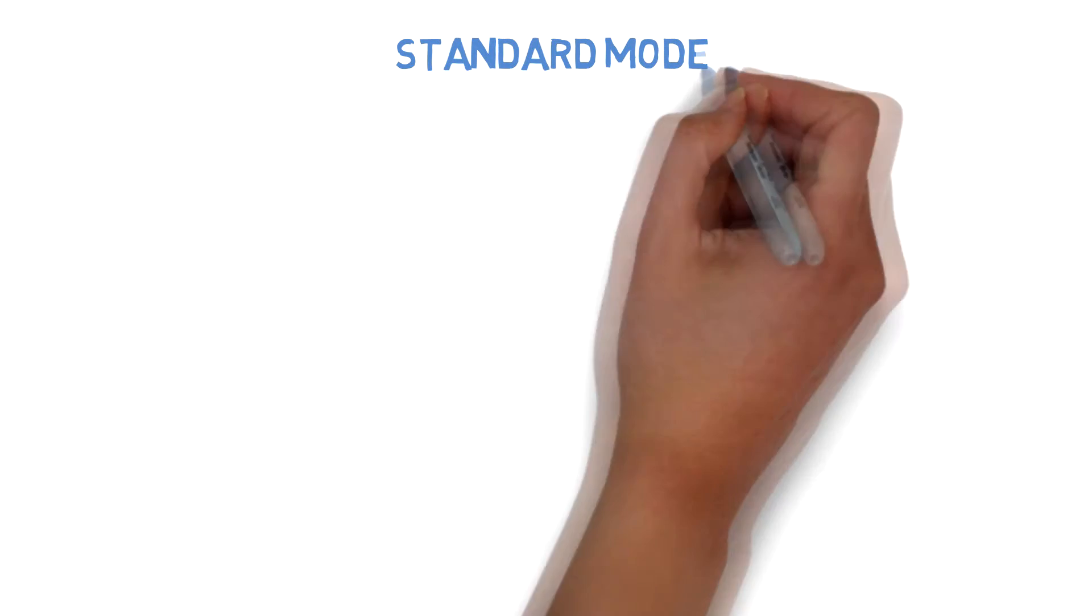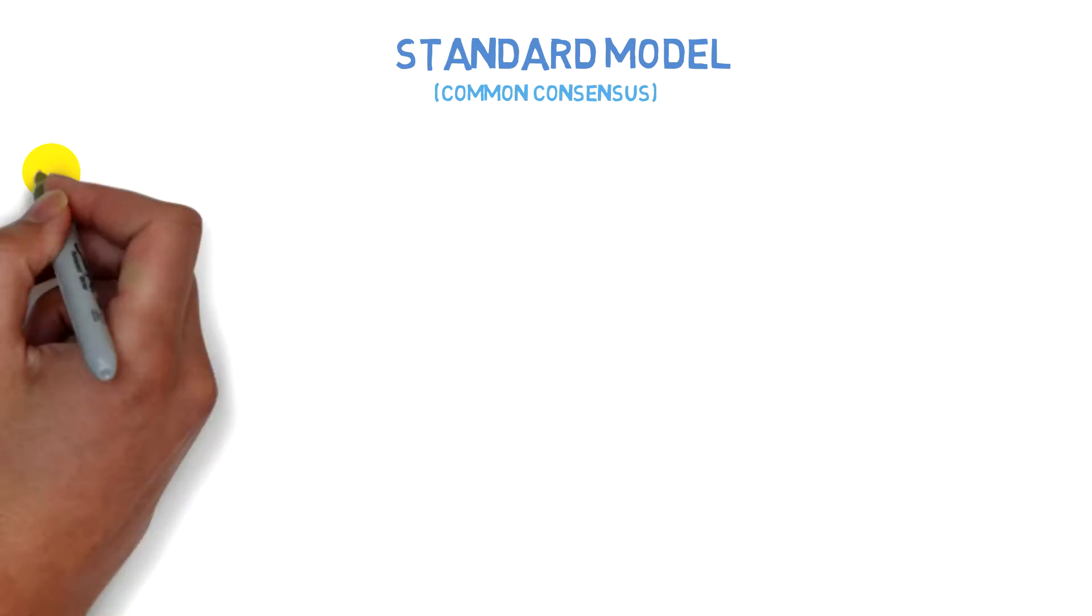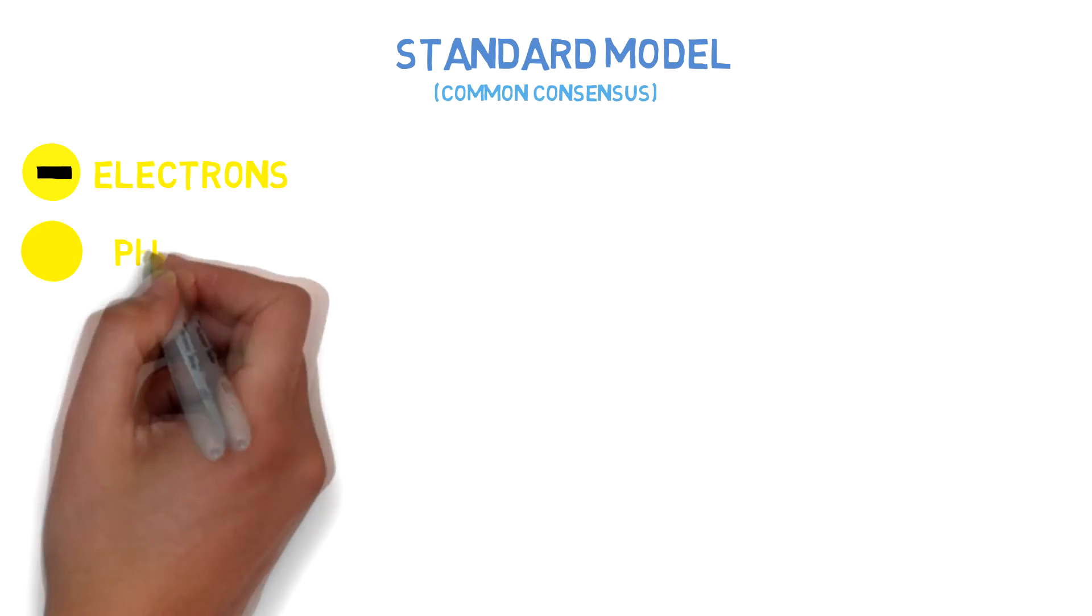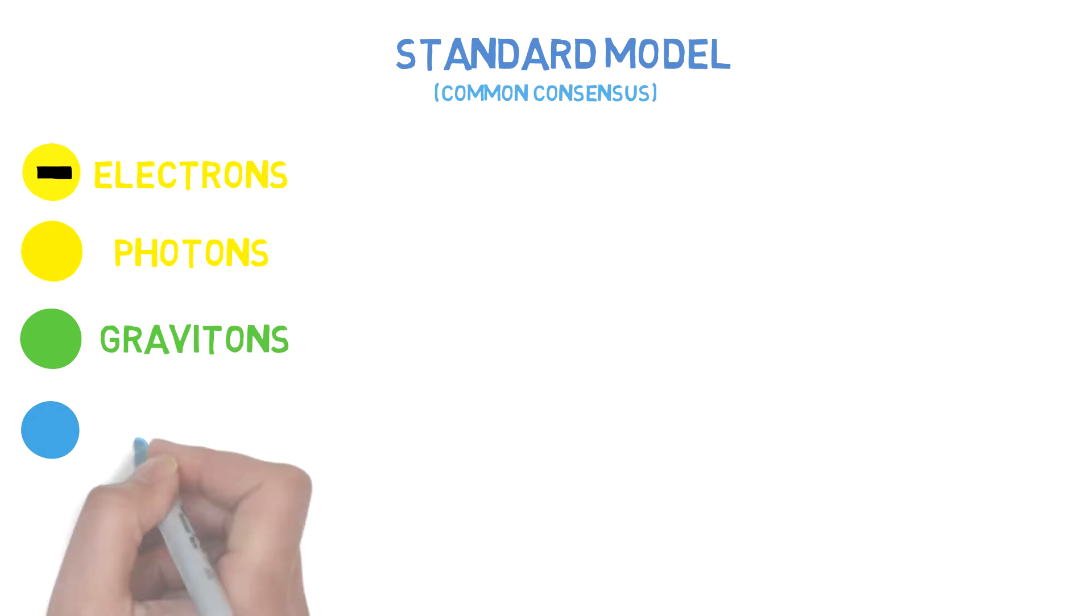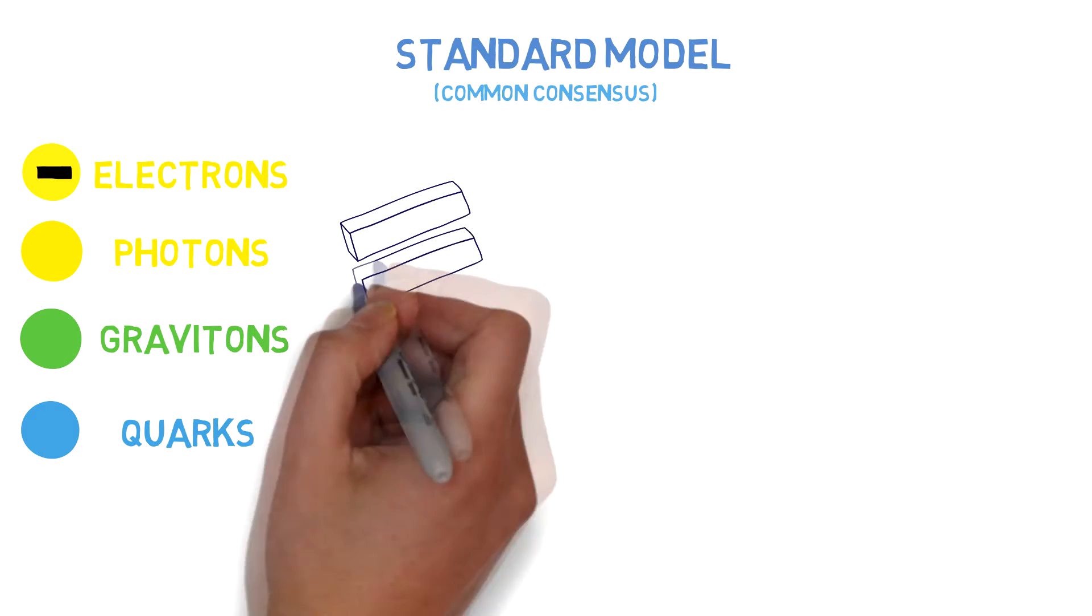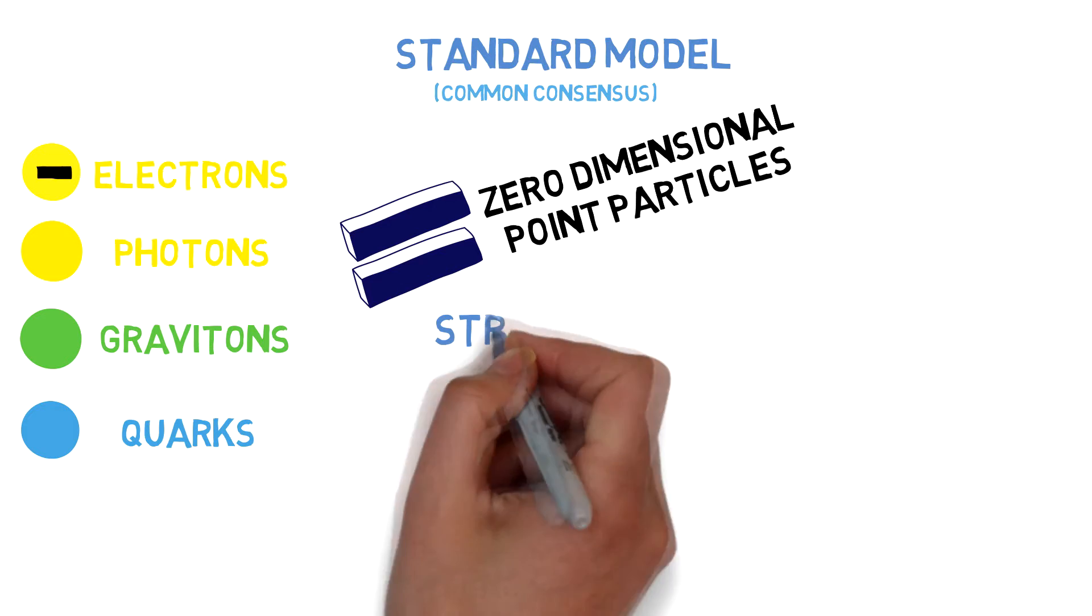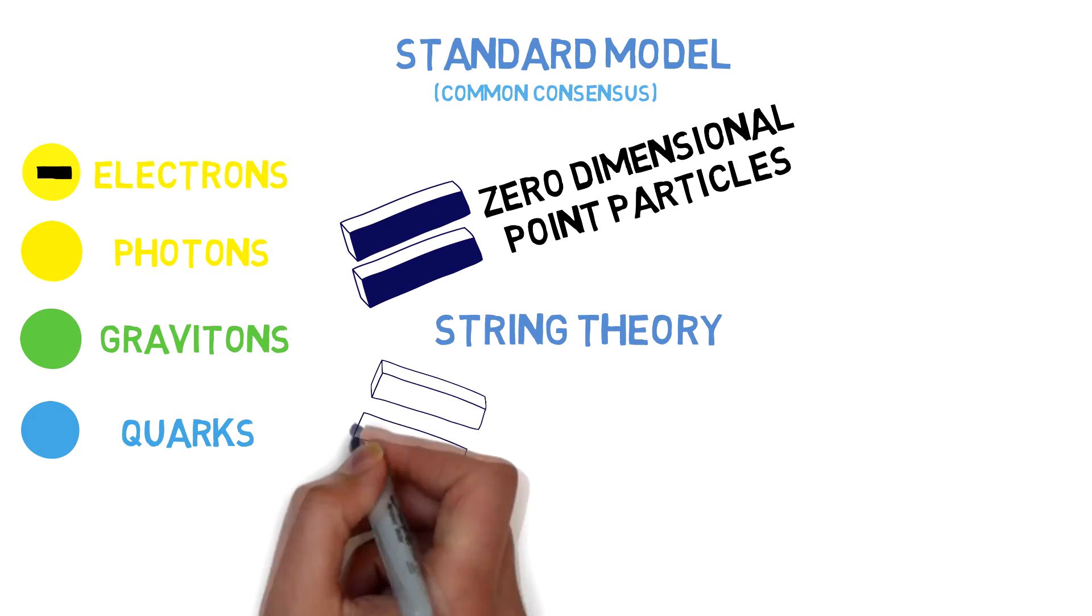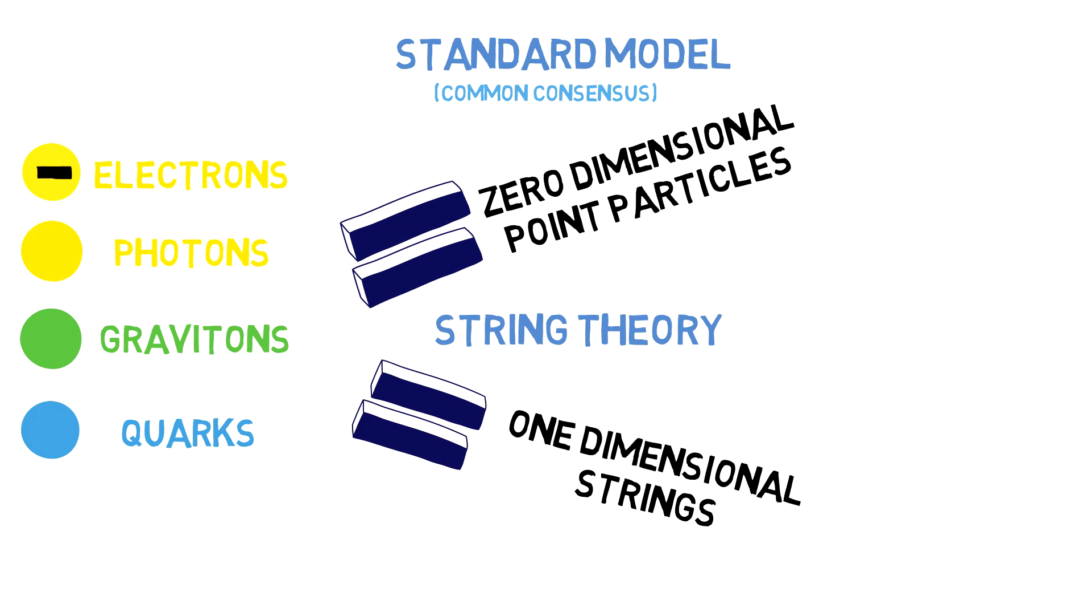According to the standard model of particle physics, elementary particles like electrons, quarks, and photons are zero-dimensional, infinitely small point particles. However, string theory tells us that these elementary particles are not zero-dimensional points, but are instead made of vibrating one-dimensional objects called strings.